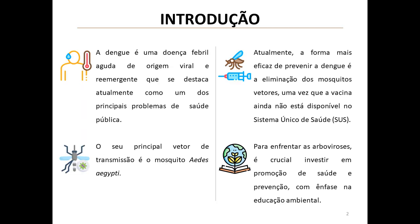The researchers begin by emphasizing the significance of dengue as a re-emerging public health concern. They highlight that the Aedes aegypti mosquito remains the primary vector for transmission.